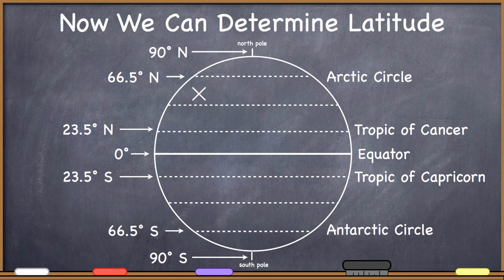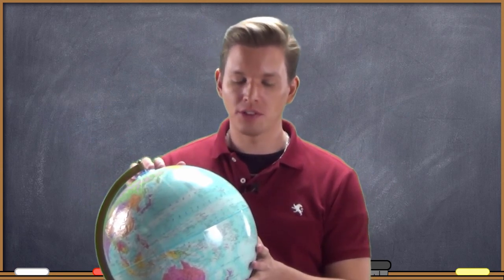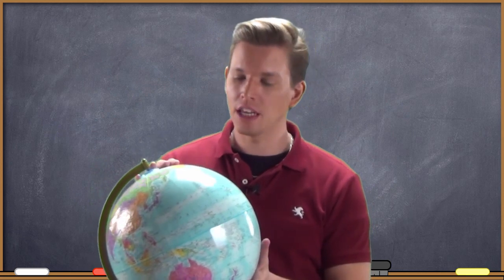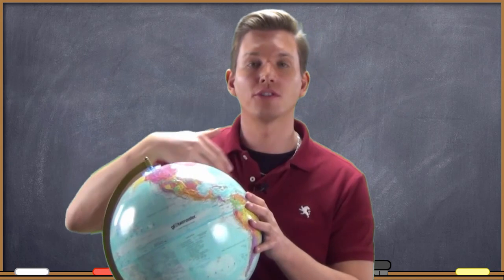We can determine latitude — this has been done for thousands of years, and it's a fantastically simple way to determine how far north or south of the equator you are on any day. So that was latitude. We're now getting further into being able to determine our position. Using the procedure we just went over, you'll be able to determine your latitude on the planet — but that's only half of the story. It's not enough just to know north and south; we also need to know east and west.